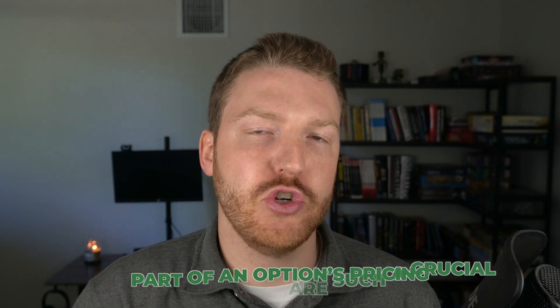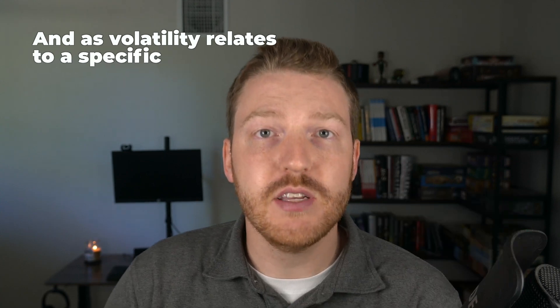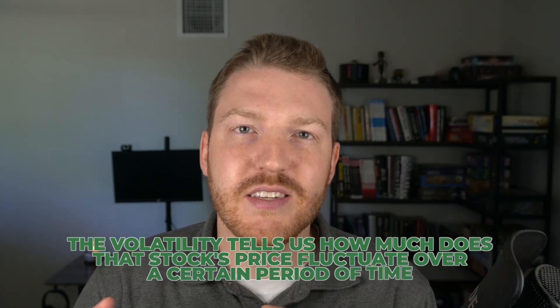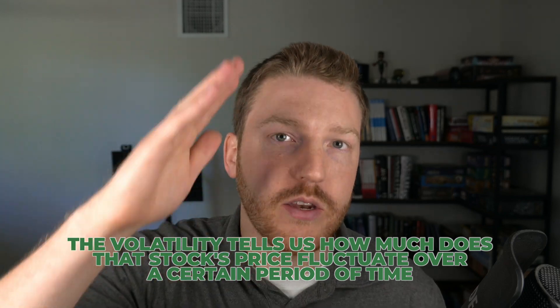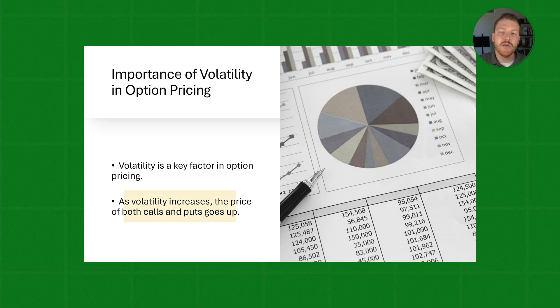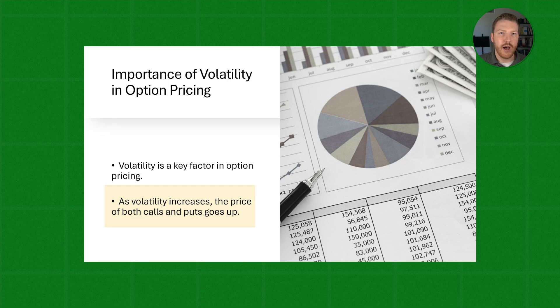Volatility measures the risk or uncertainty that there is in the market. As volatility relates to a specific stock, it tells us how much that stock's price fluctuates over a certain period of time. When volatility is high, it means that there is a greater chance that an option will expire with value. That is why for both calls and puts, higher volatility will mean a higher price for the option.